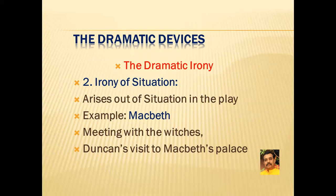The second type of dramatic irony is irony of situation. The irony of situation arises out of the action or what is done on the stage. William Shakespeare's Macbeth furnishes many examples of dramatic irony of situation in which circumstances convey opposite meanings. One notable example is Macbeth's meeting with the witches after Banquo's death, when he speaks with the witches and they tell him about his future.